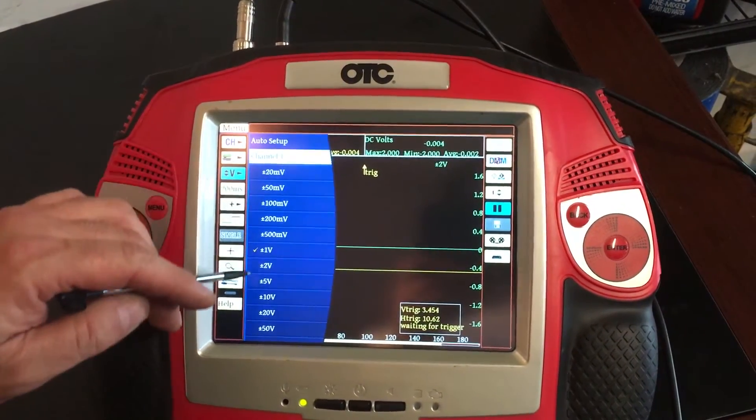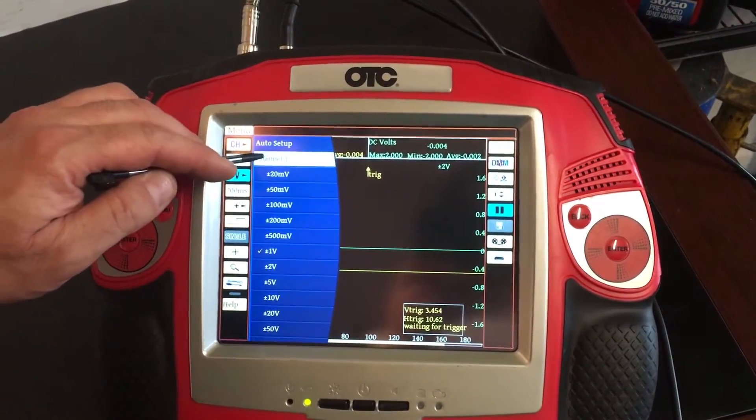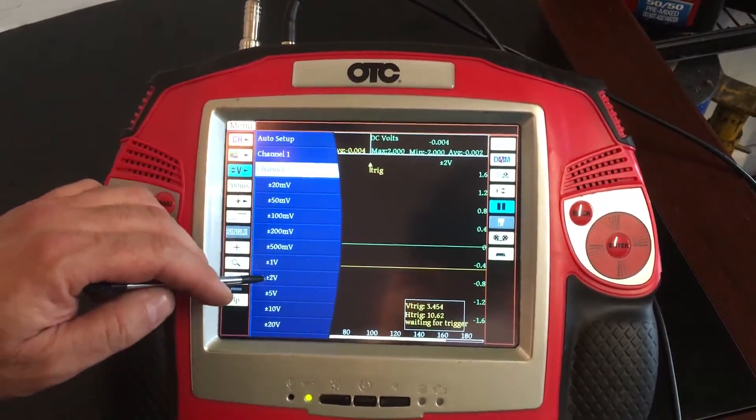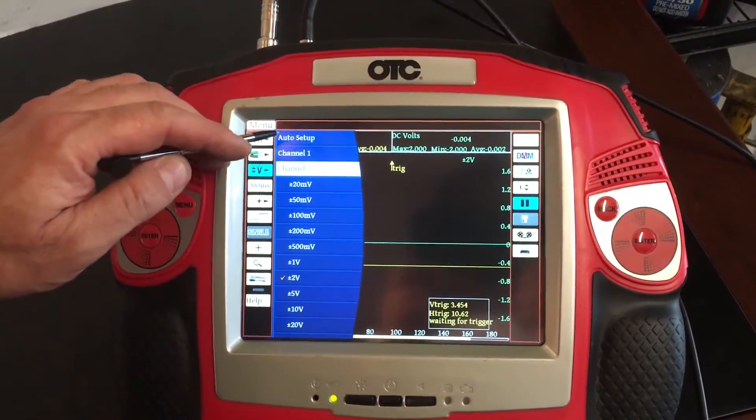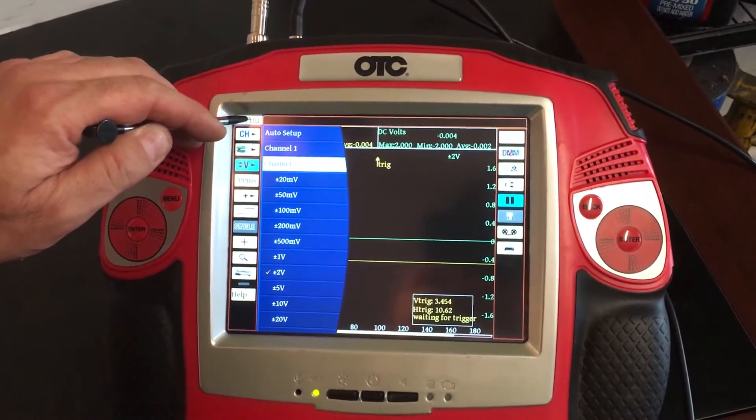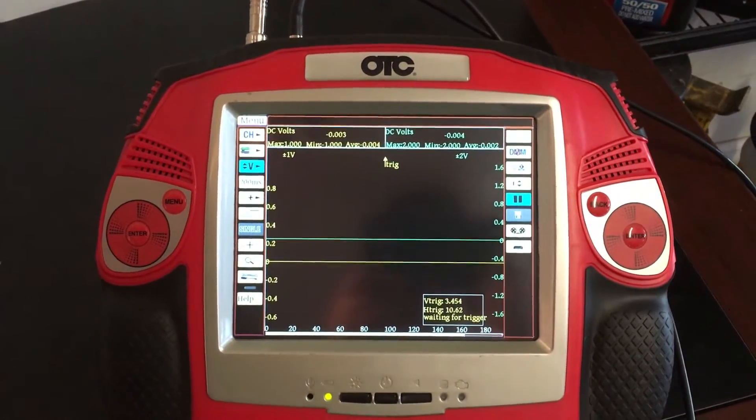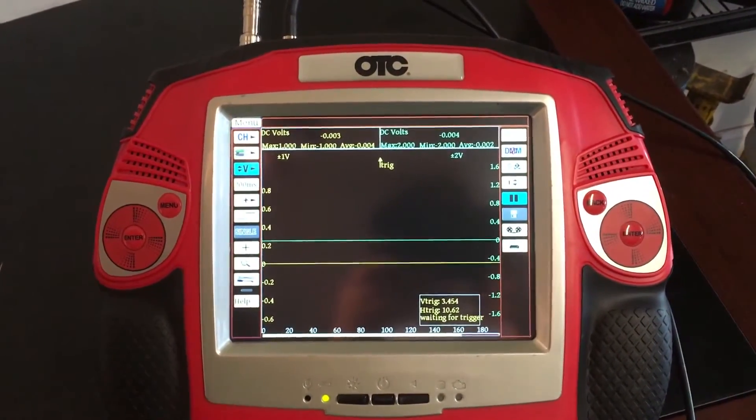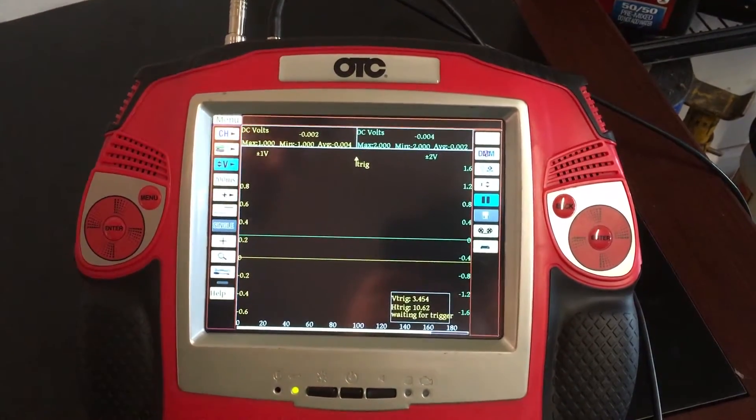On channel one, I picked one volt and on channel two, I did two volts because there's a little bit difference in the voltage between these two sensors. So now I'm going to start the car and you will see how these signals look and if this is something that you might use in your troubleshooting.